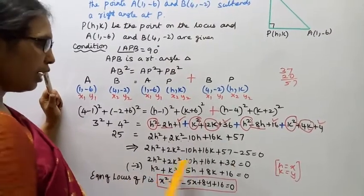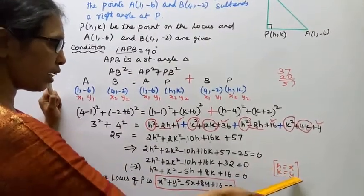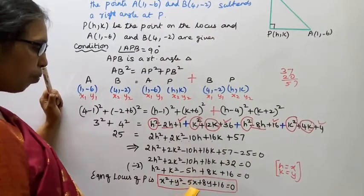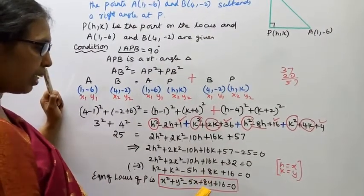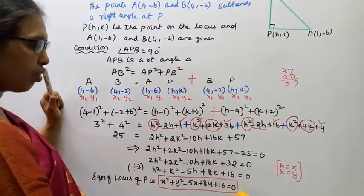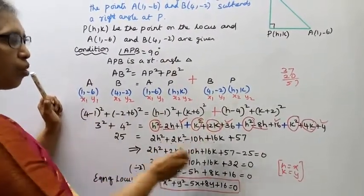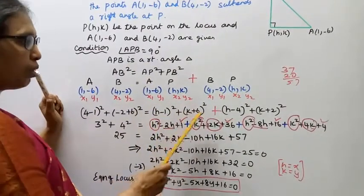The equation of locus of P is obtained by replacing h with x and k with y. Therefore: x² + y² - 5x + 8y + 16 = 0. This is the answer.